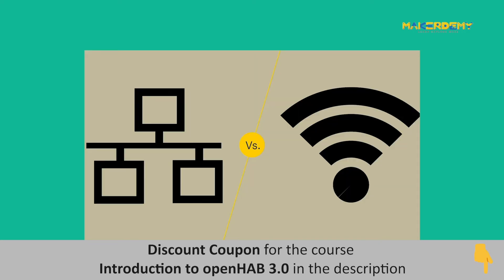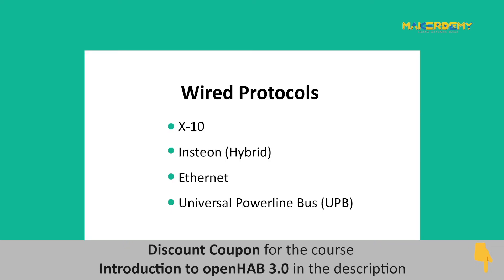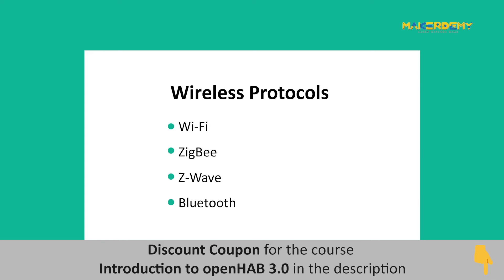Home automation standards can be broadly classified into wired and wireless systems. Some examples of wired standards would be X10, Insteon, Ethernet, and Universal Powerline Bus. Though such protocols provide reliable connectivity, they are limited in scope and not favored these days.